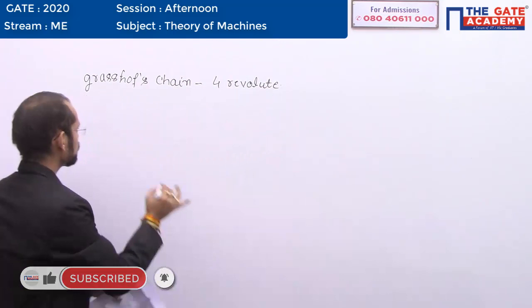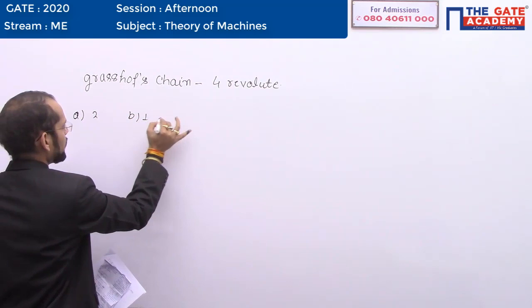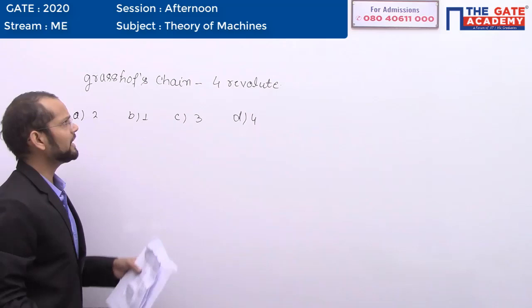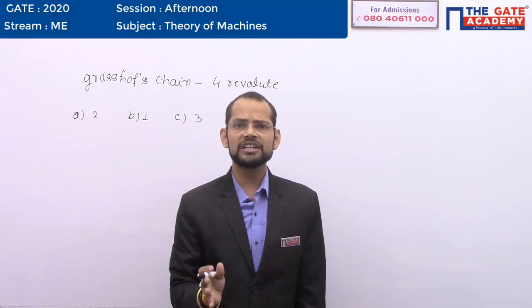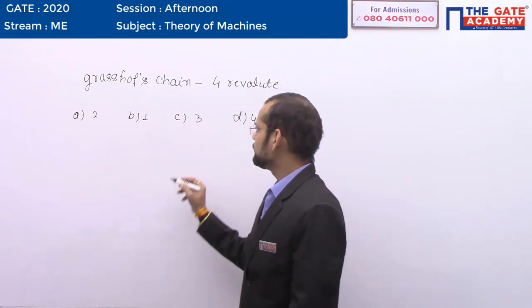The options given were: A) 2, B) 1, C) 3, and D) 4. As we know, in the case of a four-bar kinematic chain there are only three inversions: the first is double crank, the second is double lever, and the third is crank and lever. These three distinct inversions exist for a four-bar kinematic chain, so the answer is three.